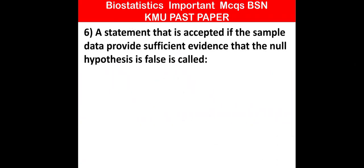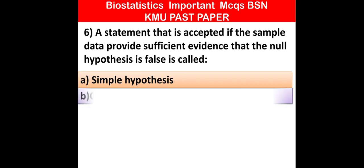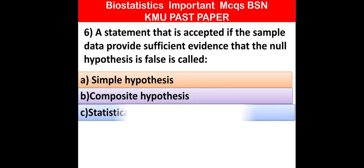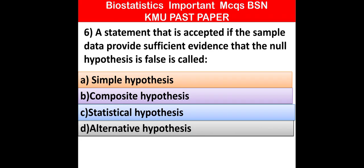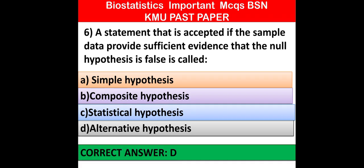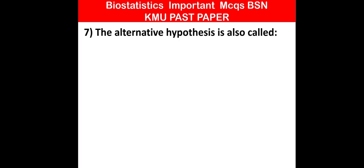MCQ number 6: A statement that is accepted if the sample data provides sufficient evidence that the null hypothesis is false is called — sample hypothesis, composite hypothesis, statistical hypothesis, or alternative hypothesis. Sufficient evidence that the null hypothesis is false — which one of the following is correct? Option D is correct: alternative hypothesis.